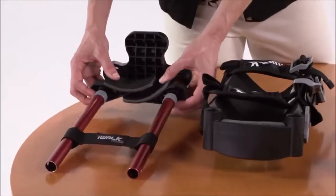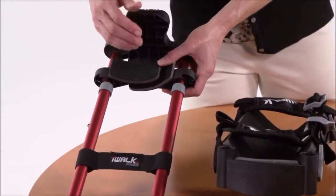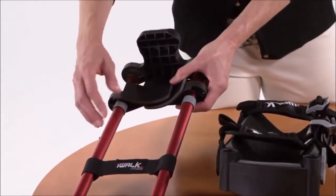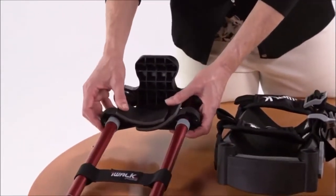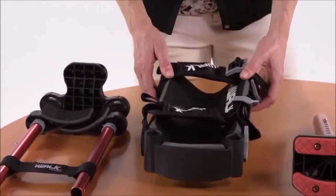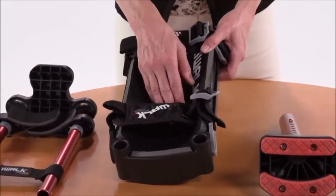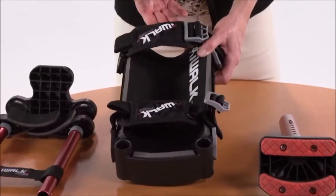The main sections of the iWALK are the upper assembly, which features a handle, thigh supports, a knee strap and two telescoping height adjustment tubes. The middle assembly, which has the knee platform, that's the part you kneel on, and two of the three straps.